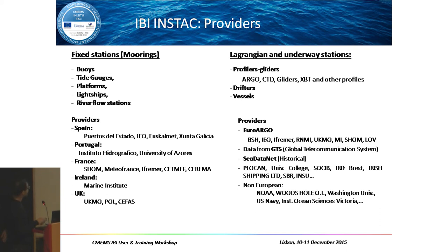For Lagrangian and underway stations we have profilers, gliders, Argo, CTDs, XBTs, drifters, and vessels. Providers include EuroArgo, BSH from Germany, IEO from Spain, IFREMER from France, the UK Met Office, Marine Institute, SHOM, LOV, data from GTS (the Global Telecommunication System), CORIOLIS for historical data, PLOCAN, Canary Islands and Ireland, Rutgers University, SOCIB, IRD, Brest, and non-European providers like NOAA and others.